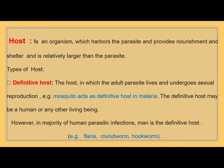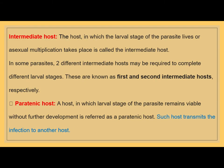Now we are coming to the host. A host is an organism which harbors the parasite and provides nourishment and shelter, and is relatively larger than the parasite. The host may be of different types. The definitive host is the one in which the adult parasite lives and undergoes sexual reproduction. Mosquitoes act as definitive host in malaria. However, in the majority of human parasitic infections, man is the definitive host — examples are hookworm infection, roundworm infection, and filariasis.